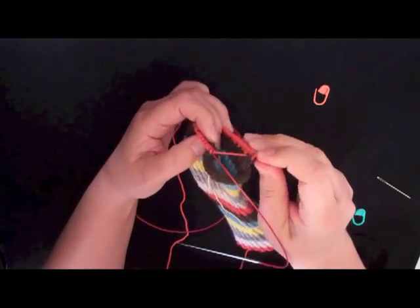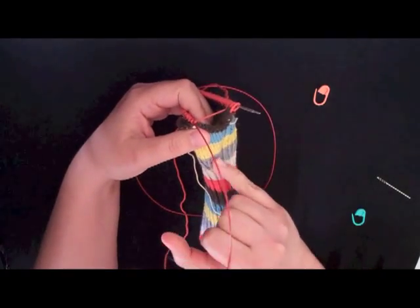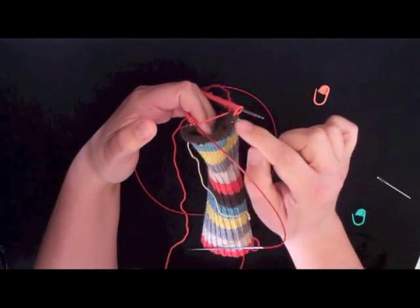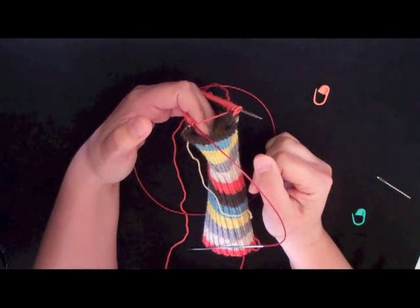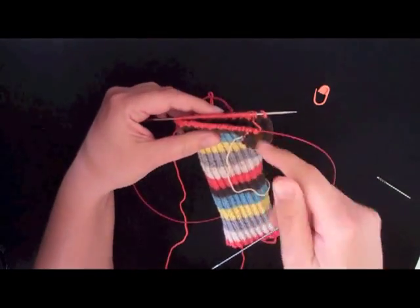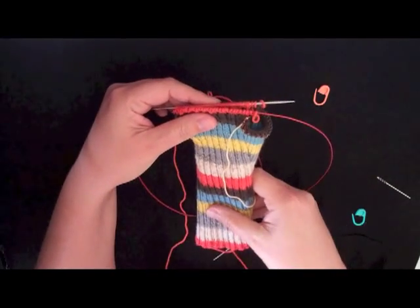Now where did those two stitches go? Because they used to be there. Well, they got consumed into the thumb. Remember we used those two knit stitches to build that thumb gusset outward, and now those stitches are all sitting down here waiting to be worked later. So we just need to add two stitches back on here to get our original number of stitches back that we cast on.